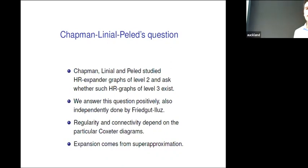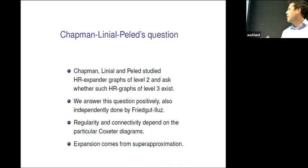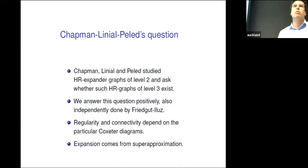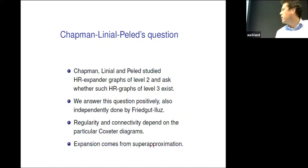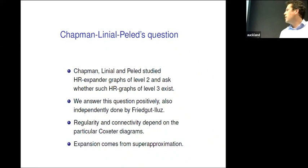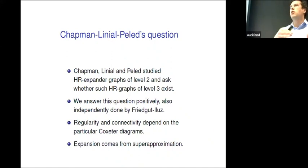The hardest property is the expansion — that's quite difficult to achieve. For that, we used very deep results from number theory, which we use as a black box, but which are very handy for us. That comes from super approximation. One difficulty in the proof is that in order to apply super approximation, you need Cayley graphs. So we will need to switch between the polytopes and Cayley graphs.